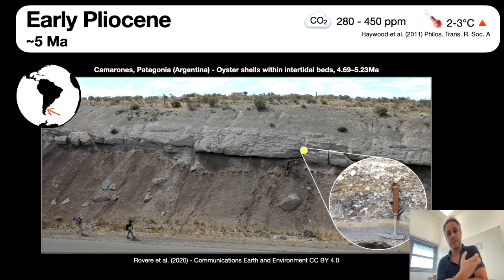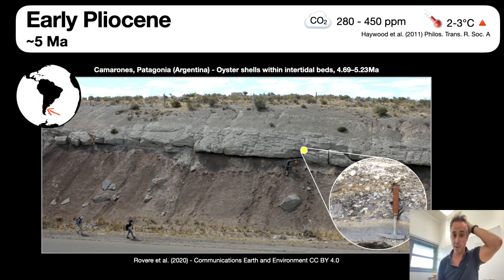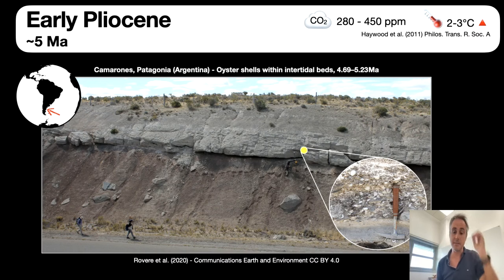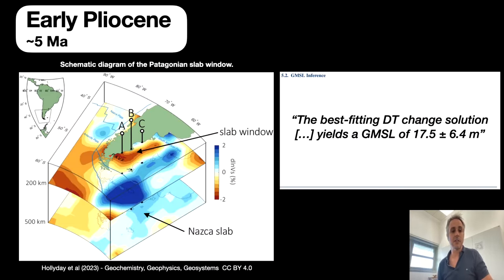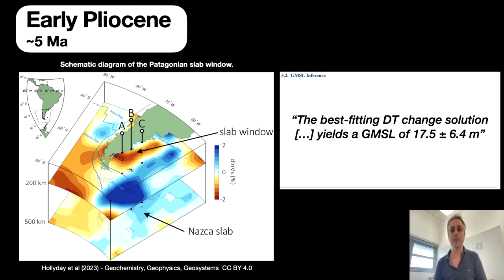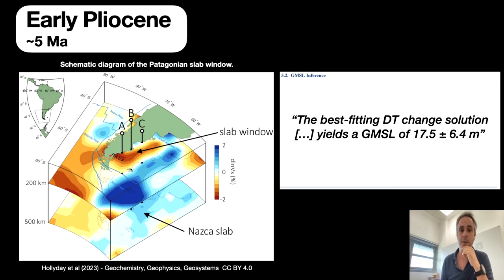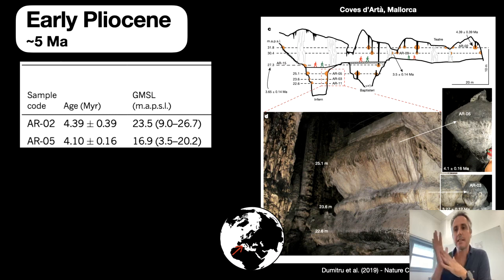Starting from very old going towards the young: early Pliocene. A few years ago, we published one of the few records of direct proxies of sea level for the early Pliocene, five million years. This is a beautiful oyster shell bed with intertidal beds in Patagonia, Argentina. Jackie Osterman and Andrew Holiday, our PhD student, put together a set of dynamic topography models, which are very uncertain in the area, and corrected the observed field elevations. They concluded that global mean sea level was about 17 plus or minus six meters.